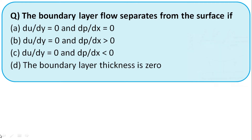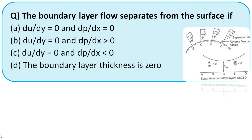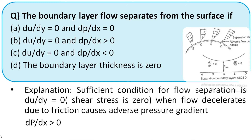Recalling the figure of boundary layer separation: when we have an adverse pressure gradient, it causes boundary layer separation, where ∂p/∂x — the change in pressure with respect to distance — becomes positive. In that case, ∂u/∂y will be 0. So the sufficient condition for flow separation is du/dx = 0 and dp/dx > 0. The right option is option B.